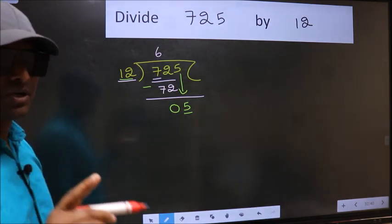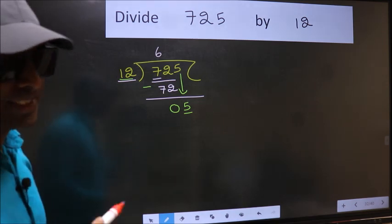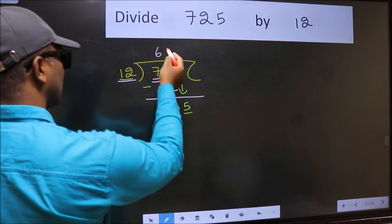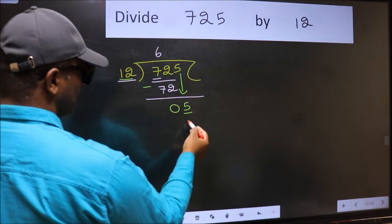Instead, what you should think of doing is, which number should we take here. If I take 1, we will get 12.